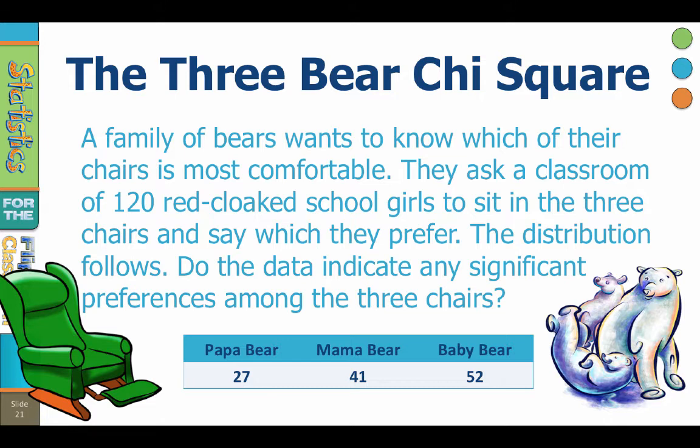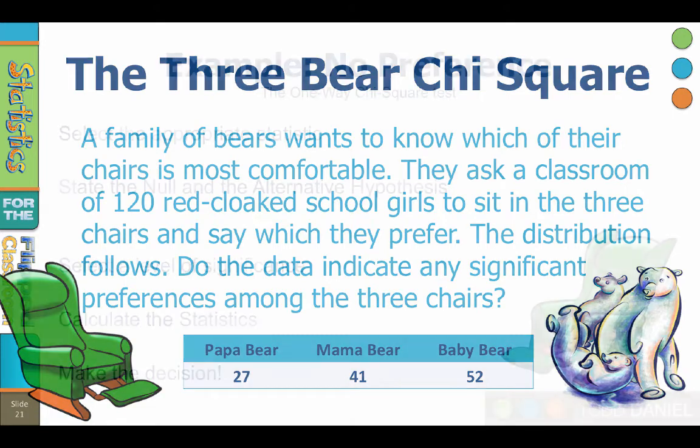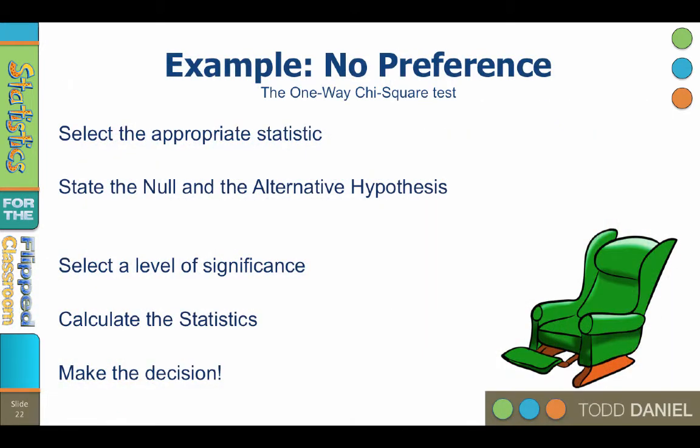Let's work through the five steps of hypothesis testing. Step number one: Select the appropriate statistic. We are comparing proportions from a single sample, obtained, to what we expect to find in the population, expected. We will use the one-way chi-square goodness-of-fit test for no preference.